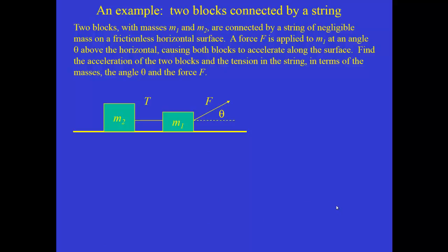Two blocks with masses M1 and M2 are connected by a string of negligible mass on a frictionless horizontal surface. A force F is applied to M1 at an angle theta above the horizontal, causing both blocks to accelerate along the surface. Find the acceleration of the two blocks and the tension in the string connecting them in terms of the masses, the angle theta, and the force F.